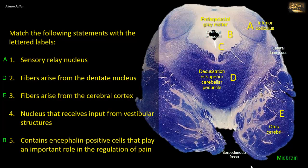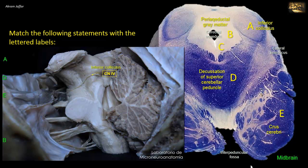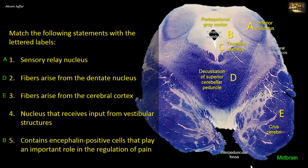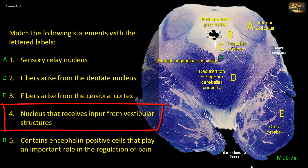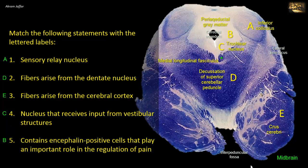C is located within the periaqueductal gray matter, ventral to the cerebral aqueduct, and at the level of the inferior colliculus. It is thus the location of the trochlear nucleus. Being a nucleus involved in the supply of extraocular muscles — in fact it supplies only one, the superior oblique muscle — it is also connected to the nearby medial longitudinal fasciculus. This fasciculus consists of ascending and descending fibers that connect vestibular and cochlear nuclei with nuclei controlling extraocular muscles: the trochlear nucleus here, oculomotor nucleus at a higher level, and the abducent nucleus at a lower level in the pons. C, the trochlear nucleus, thus matches with 4: it receives input from the vestibular nuclei via the medial longitudinal fasciculus, for coordinating head and eye movements.